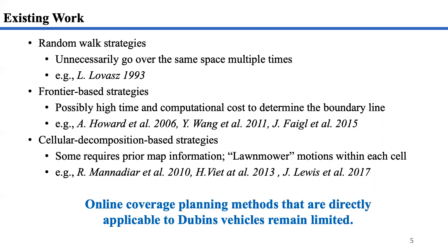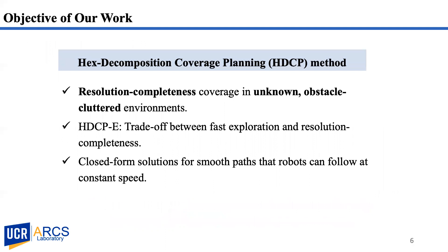For those online ones, lawn-mower motions are usually applied within each cell. The generated paths in aforementioned methods may contain sharp turns, which can reduce efficiency and increase fuel consumption for non-holonomic robots. Overall, these methods require modification for two-beam vehicles to use. In this work, we propose the Hexagon Decomposition Coverage Planning method to fill in the gap. This method is an online approach that guarantees resolution-complete coverage in unknown environments.